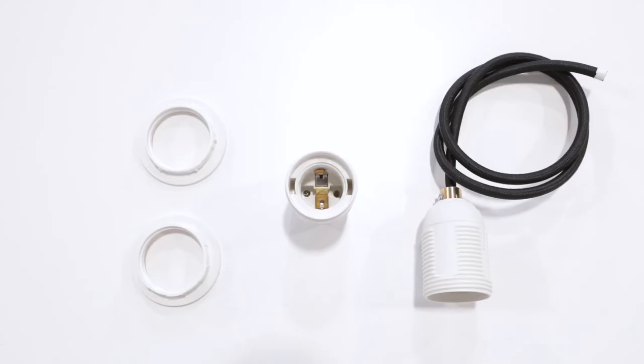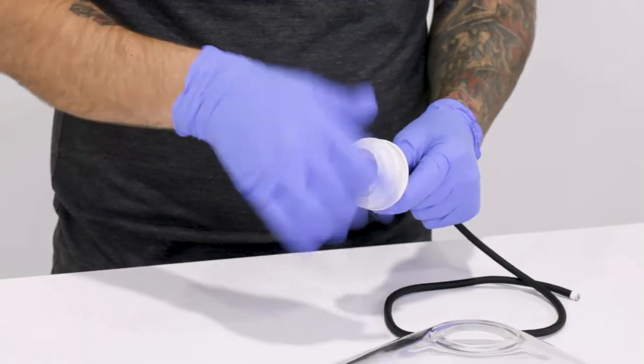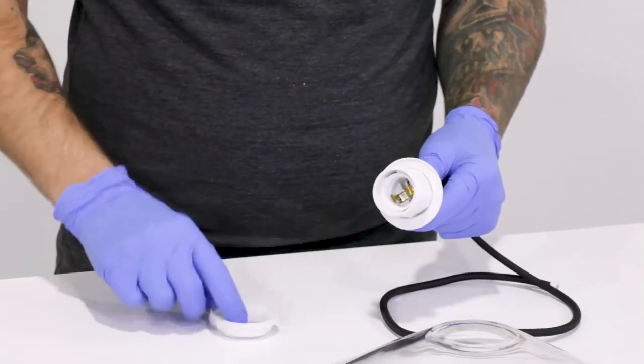Now we're going to do the same thing, but with our extended thread socket without a socket cover. We'll also have to use an extra socket ring to act as the upper lip of the socket, like we showed you earlier with the half cap socket cover assembly.